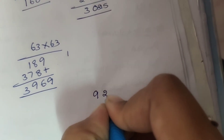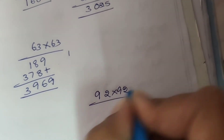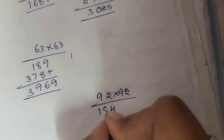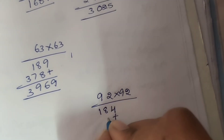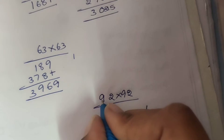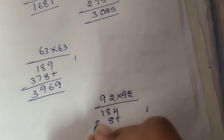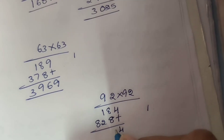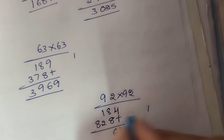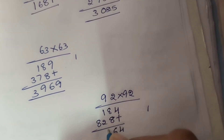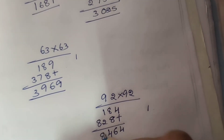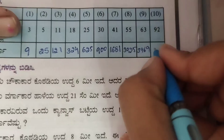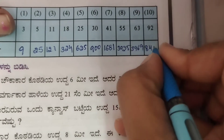Last one, side 92: 92 into 92. 2 twos are 4. 2 nines are 18, plus 9 twos are 18, so 8 carry 1. 9 nines are 81, 81 plus 1 is 82. 8 plus 8 is 16, carry 1. 1 plus 1 is 2, 2 plus 2 is 4. The answer is 8464.